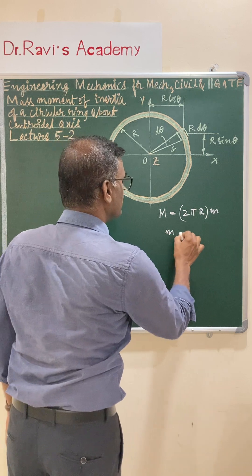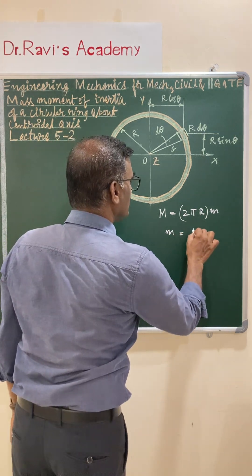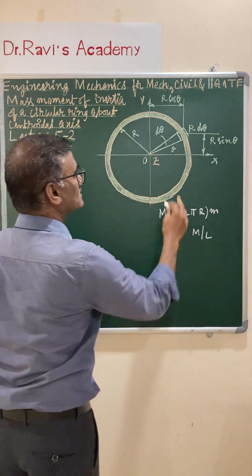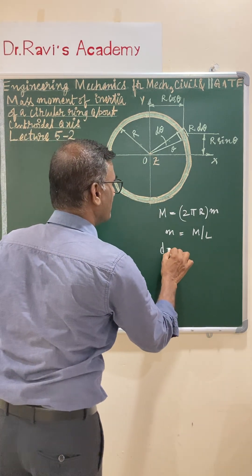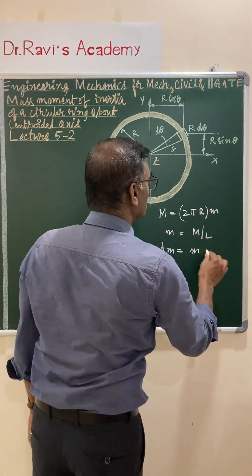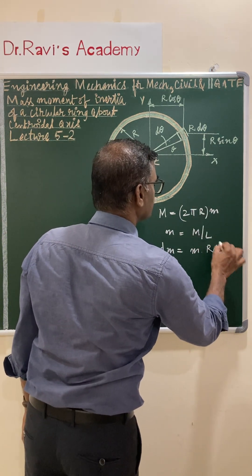It is mass per unit length. Write the expression for elemental mass, that is dm. dm is equal to m into length, which is r dθ. So this is the expression for the elemental mass.